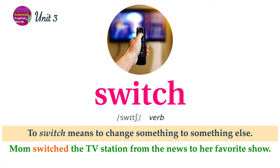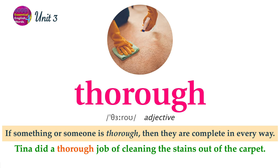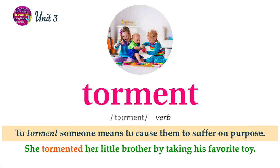To switch means to change something to something else. Mom switched the TV station from the news to her favorite show. If something or someone is thorough, then they are complete in every way. Tina did a thorough job of cleaning the stains out of the carpet. To torment someone means to cause them to suffer on purpose. She tormented her little brother by taking his favorite toy.